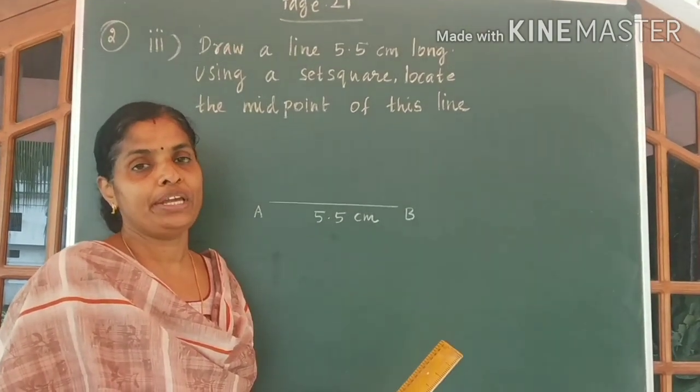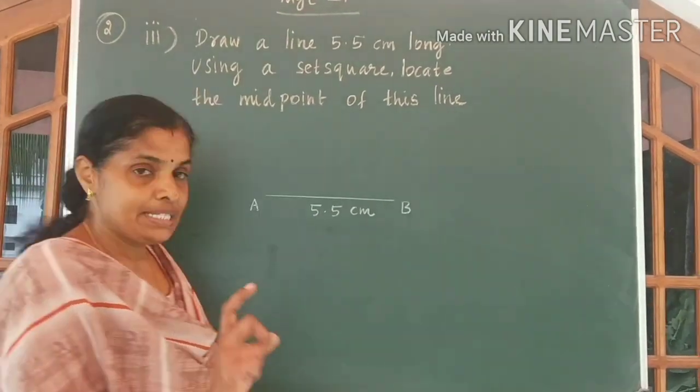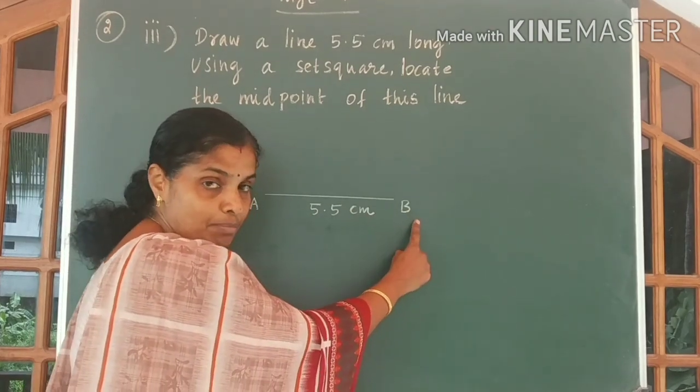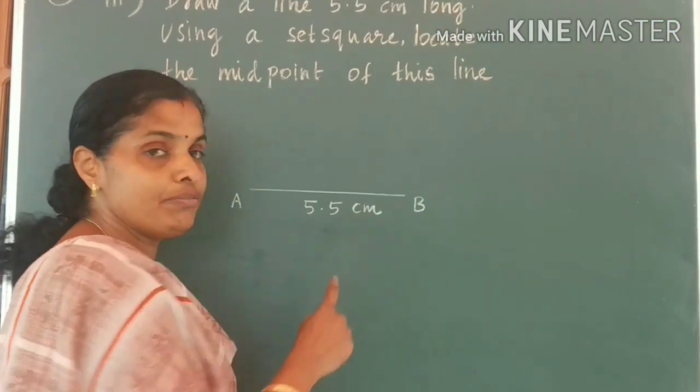See how I am going to draw the figure. First of all, I have drawn a line AB which is 5.5 cm.